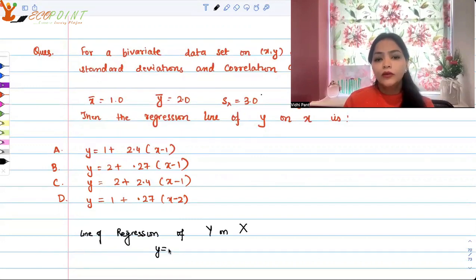The line of regression of y on x will be equal to y minus y bar equals correlation coefficient r times s_y standard deviation of y upon standard deviation of x s_x, multiplied by x minus x bar. So this is what will be your equation.